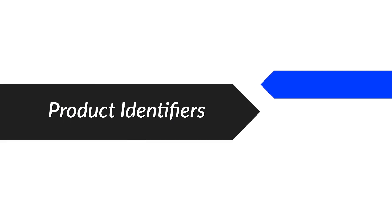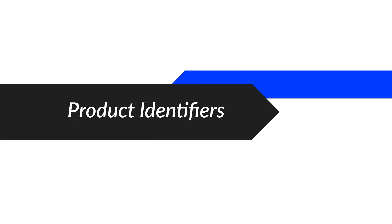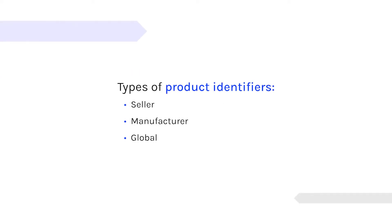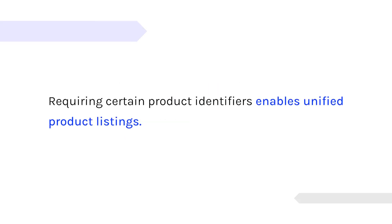To continue on attributes, today we're going to talk about product identifiers. In the last five years, especially around 2016, there was a big push towards requiring product identifiers, especially the global ones like UPCs, because based on the success with Amazon, it allows products to show competitors on a unified product listing.